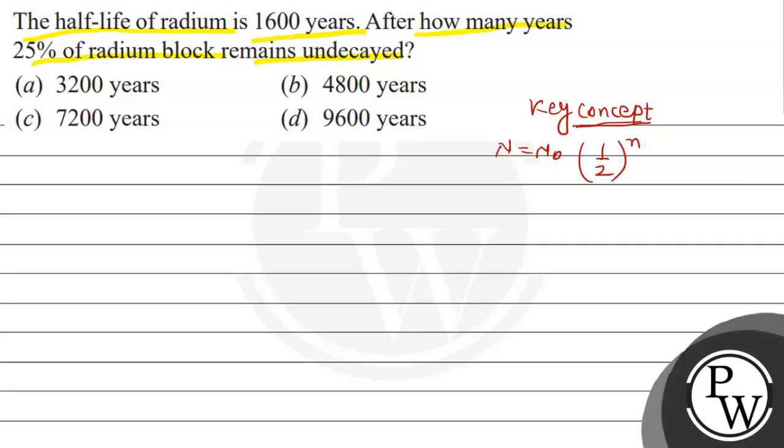So let's see the solution. Student, like I have told you this relation, by using this relation, we can write that N by N₀ equals to one by two raised to power n. Look, here we can calculate our n here.